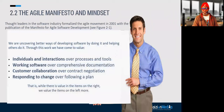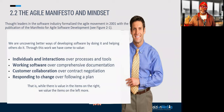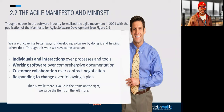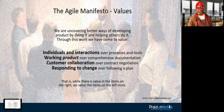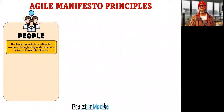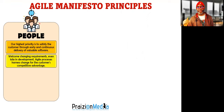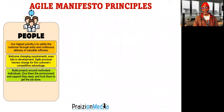The Agile Manifesto is talked about in this book and we've got four values. Value individuals and how they interact more than processes and tools. Value working software over comprehensive documentation. Value customer collaboration over contract negotiation, and value responding to change over following a plan. You can find the full manifesto at agilemanifesto.org. There's also an understanding of the principles, and I'm going to give you a different spin for the Agile Manifesto principles. I break them into people principles. Our highest priority is to satisfy the customer. Welcome changing requirements so that you can add value to your customer and enable them to harness change for their competitive advantage.